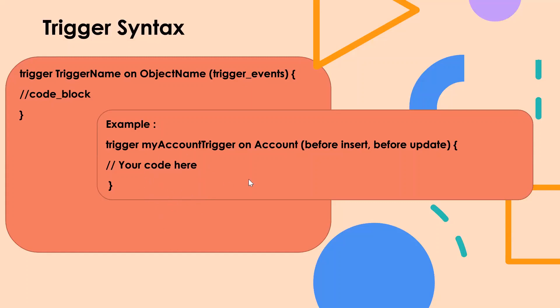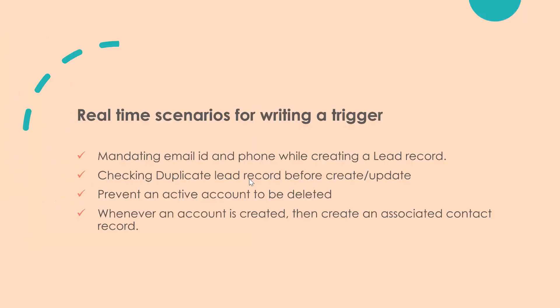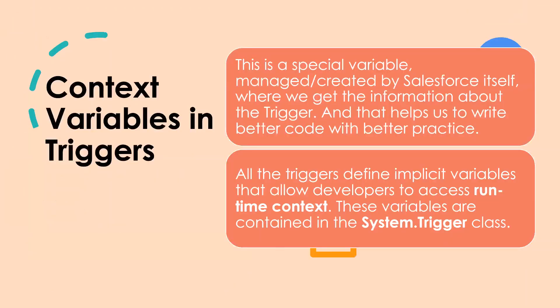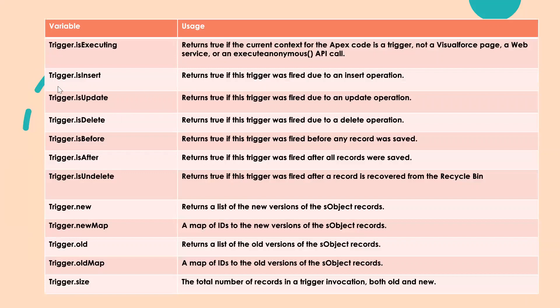We have context variables to make things easier. For example, trigger.isInsert will return true if the trigger is getting executed in an insert operation. Likewise, we have trigger.isUpdate, which will return true if the trigger was fired due to an update operation. Similarly, we have isDelete, isBefore, isAfter, and isUndelete. These are some of the context variables that you can use for the events.